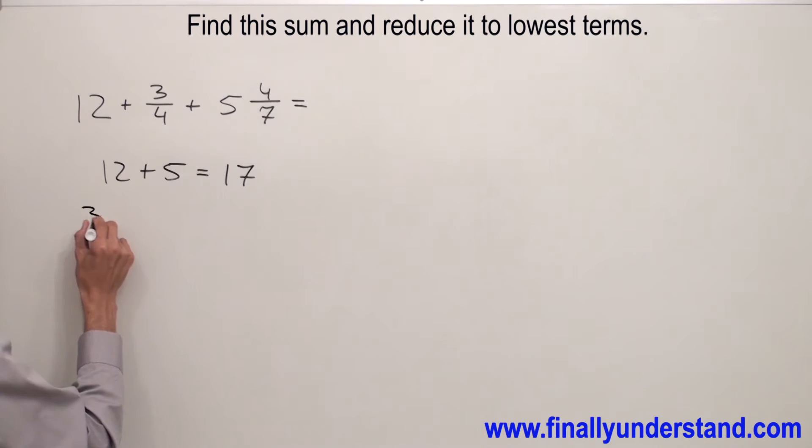I have 3 over 4 plus 4 over 7. Please notice that we have different denominators. We have to find common denominators. I have 3 over 4 and I have 4 over 7.